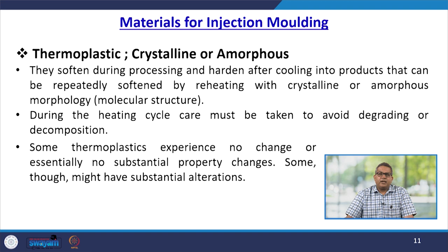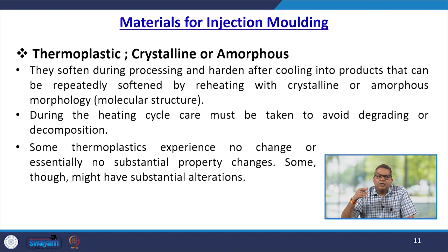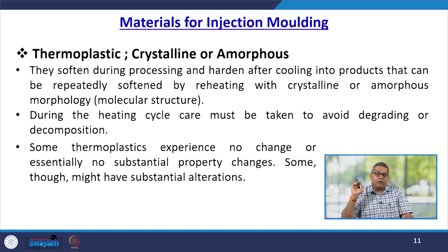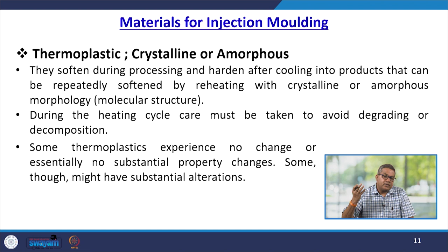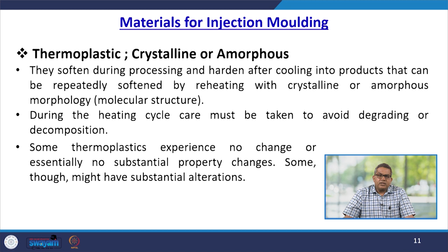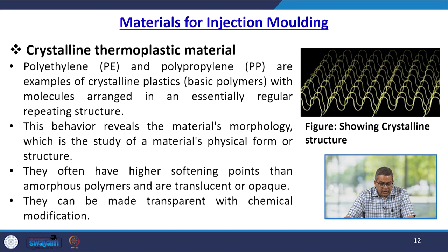Let us have a brief outlook about the different types of thermoplastics — crystalline or amorphous. They usually soften during processing and harden after cooling into the desired product. They can be repeatedly softened by reheating, based on their crystalline or amorphous morphology and molecular structure. During the heating cycle, care must be taken to avoid degradation or decomposition, because once degraded they cannot recover their original chemical properties.